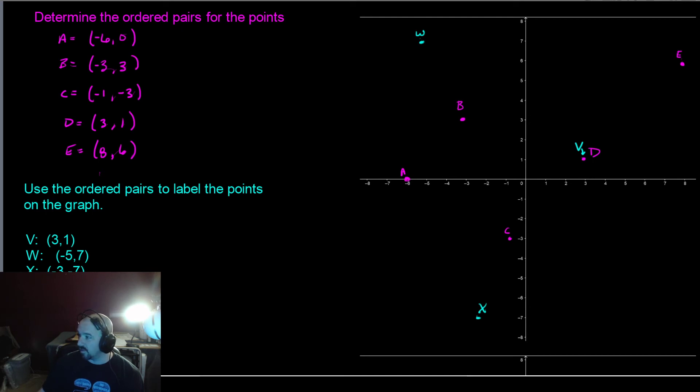Y, we go over to 4, 1, 2, 3, 4, and then we go down 6. So it looks like we're about here.